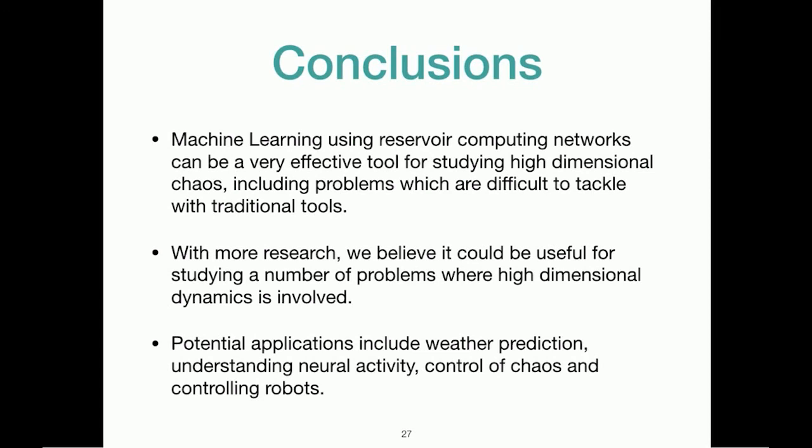And to conclude my talk, machine learning using reservoir computing networks can be a very effective tool for studying high-dimensional chaos, including problems which are difficult to tackle with traditional tools. And with more research, we believe it could be useful for studying a number of problems where high-dimensional dynamics is involved, with potential applications including weather prediction, understanding neural activity, control of chaos, controlling robots, etc.